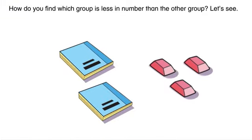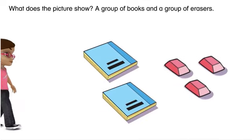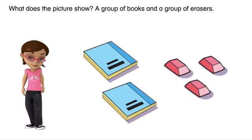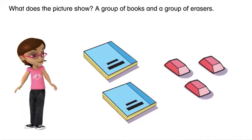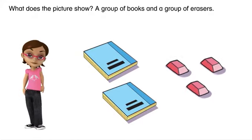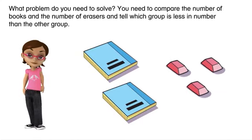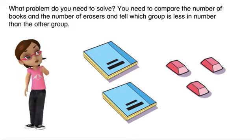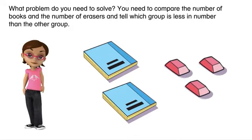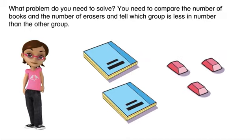How do you find which group is less in number than the other group? Let's see what the picture shows: a group of books and a group of erasers. What problem do you need to solve? You need to compare the number of books and the number of erasers and tell which group is less in number than the other group.